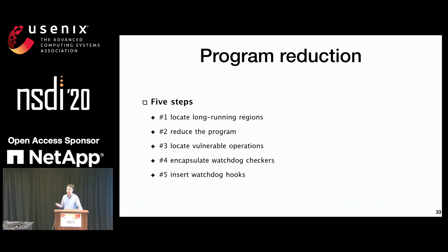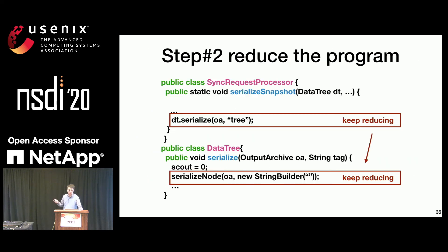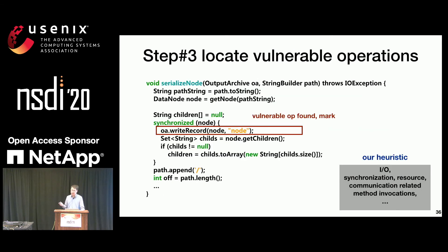The whole workflow takes five steps. First, a target system could have very large code regions, but we only care about the parts that may execute continuously. For example, the full lifespan of a system module could have initialization, long-running, and cleanup stages. We're only interested in failures in the long-running stage, and we output a list of functions that are continuously running. For each such function, we are interested in retaining operations that are worthy of monitoring. Our tool will recursively analyze each function and look for vulnerable operations. Our current criteria for selecting such vulnerable operations are based on heuristics, which by default include I/O, synchronization, synchronized waits, and so on. We also allow developers to customize this criteria.